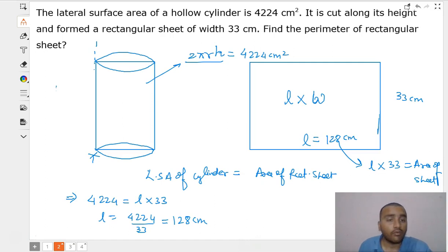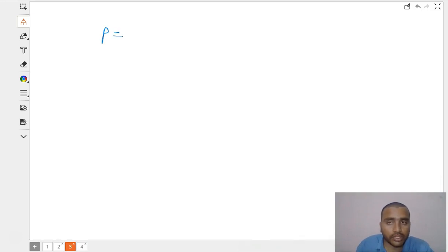Hence we can easily find the perimeter of the sheet. Since the sheet is rectangular, the perimeter equals 2 times length plus width.